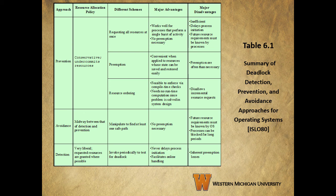That does it for this last video of chapter 6 from your operating systems textbook. Go ahead and read the next section on the dining philosopher's problem — it's an oldie but a goodie, and it's a great example of how deadlock works and some strategies for avoiding deadlock in concurrent programming. We'll see you with the next set of videos on chapter 9, which will cover scheduling strategies.